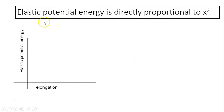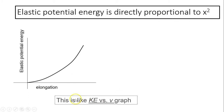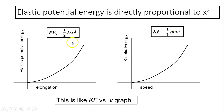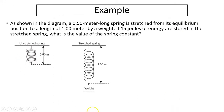Looking at the graphs, elastic potential energy is directly proportional to x squared, meaning the graph is a parabola. This is very similar to kinetic energy versus velocity, which is also a parabola, because the relationships are very similar: PEs versus x is analogous to KE versus v.